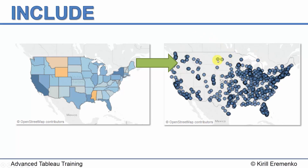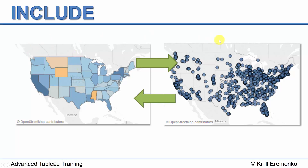We took those sums of profits attributed to every city and brought that value back into our visualization. Because we're going from a more granular to a less granular level, we had to aggregate the measures we created. So we had the sum of profit for every city, but since we're talking about things at the level of state, we took the average of the city profits for every single state. That's how we used LOD include.